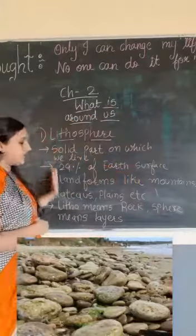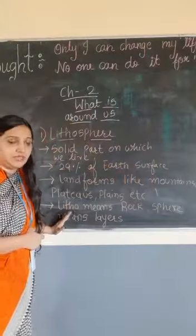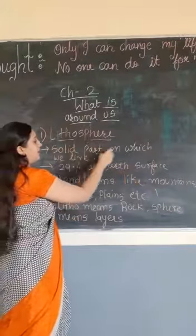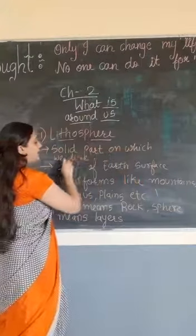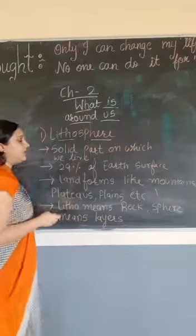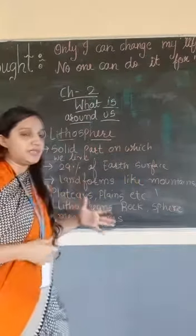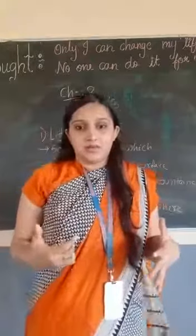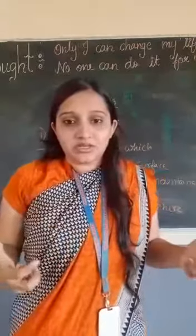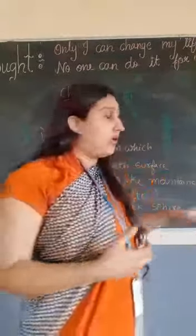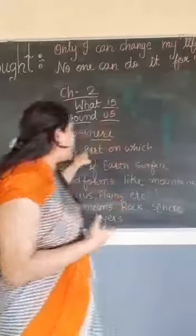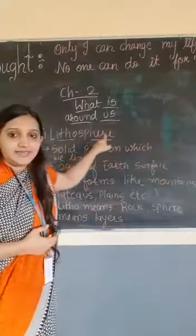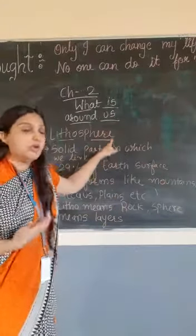These are the key points of lithosphere. First, solid part on which we live. Lithosphere means all the solid part — we live in a solid structure. So all the solid part on which we live is lithosphere.